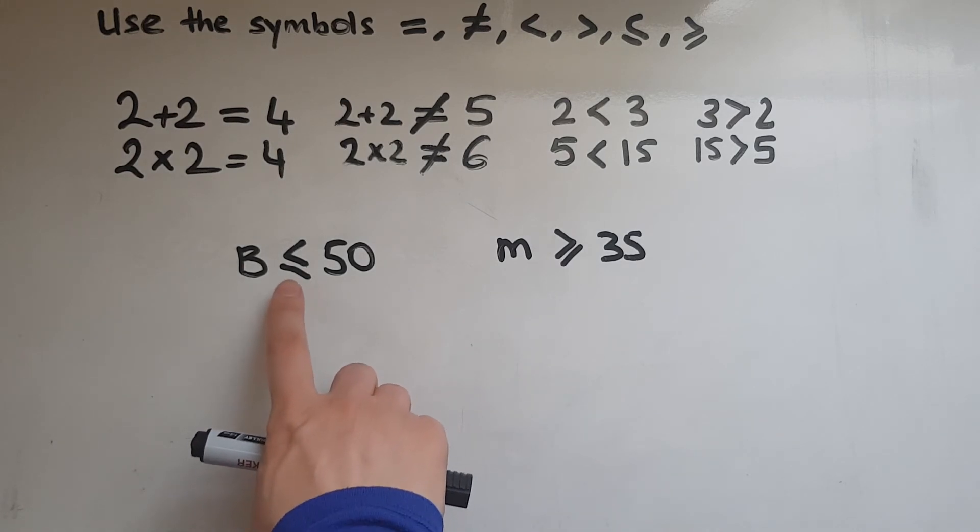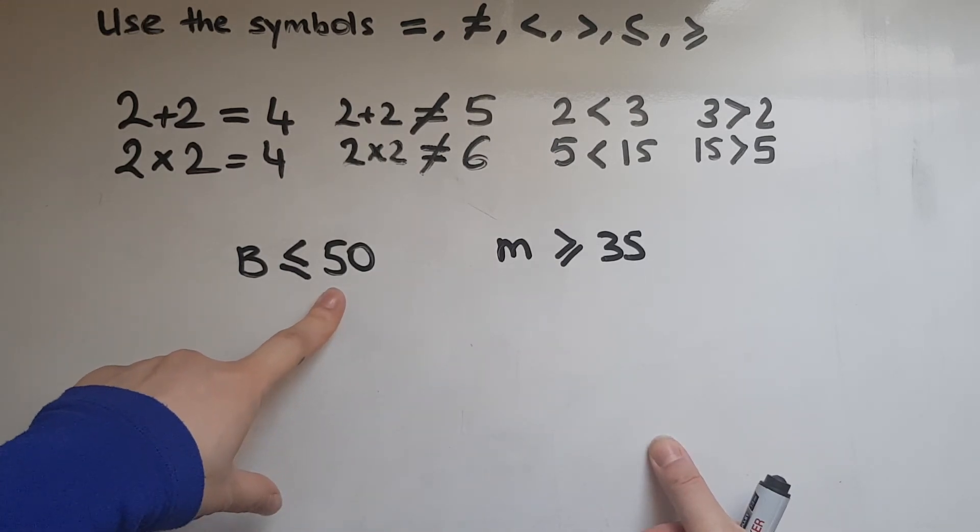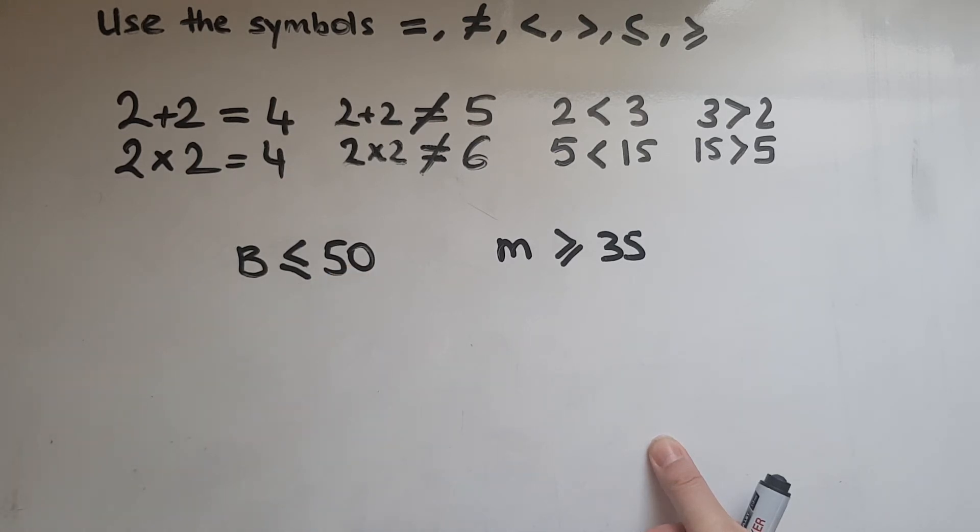The smaller than or equal to symbol suggests that whatever you're talking about has got to be smaller than or equal to. It could be smaller, it could be equal. Both of them, either of them. Both are acceptable.